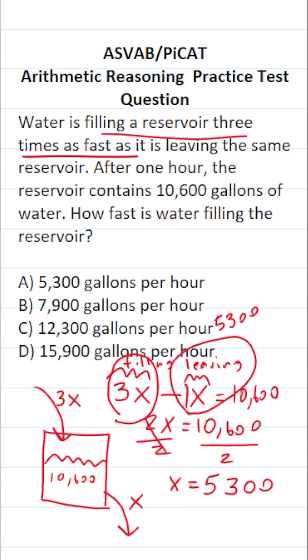3X refers to the rate at which it's filling the reservoir. And that's what we want to find out. How fast is water filling the reservoir? So that's going to be three times 5,300 because we know 5,300 is X.